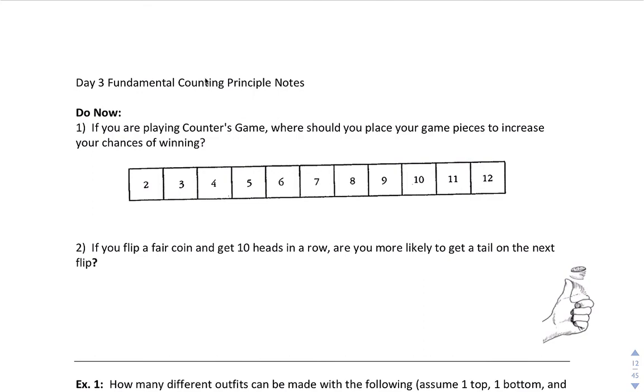Where should you place your game pieces to increase your chances of winning? We talked about if you roll two dice and you add them together, the most common number that should pop up is seven, because there are more ways to get seven than any other sum. So if you put your counters on seven or near seven, it will increase your chances of winning.